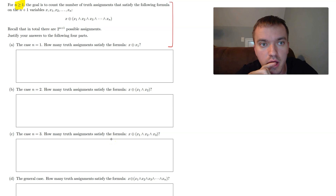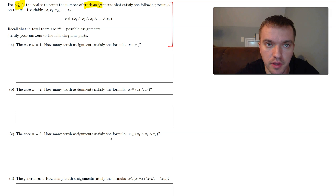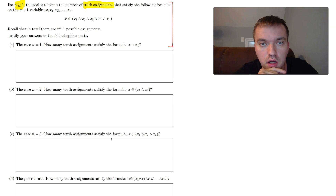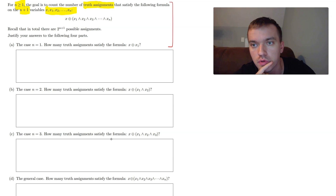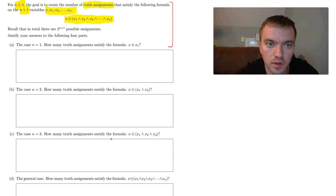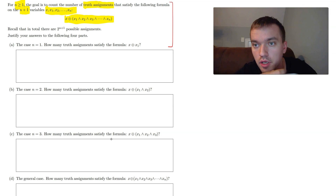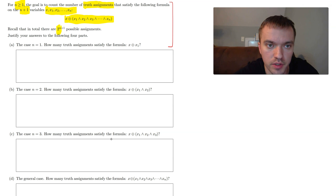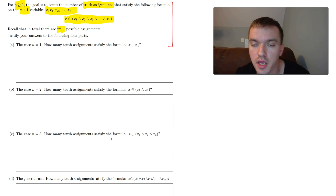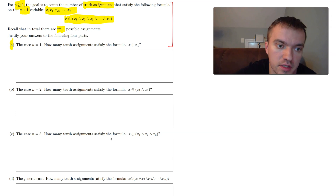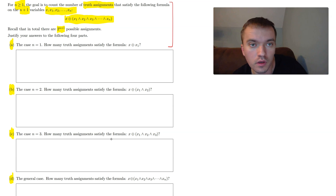For example, I can see that n is strictly greater than or equal to 1, and the goal is to count the number of truth assignments satisfying the following formula. Another key term here is 'truth assignment' — the formula has n+1 variables: X, X1, X2, up to Xn. We also have a hint: there are 2^(n+1) total assignments, and we justify the answer through four parts A, B, C, and D.